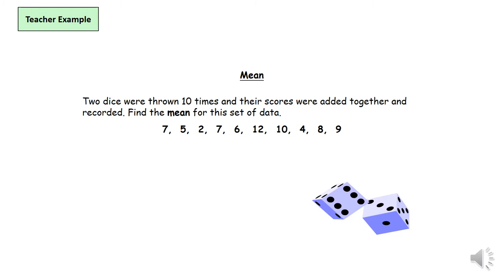So we have one, two, three, four, five, six, seven, eight, nine, ten. We have ten bits of data, ten scores.